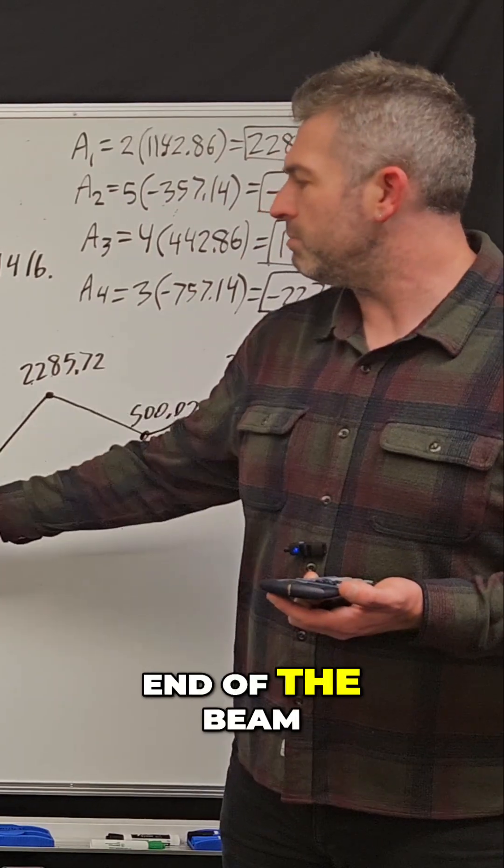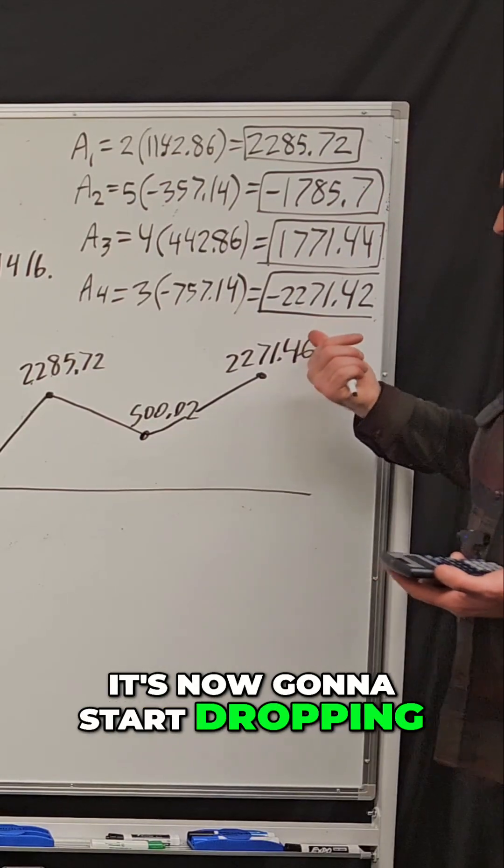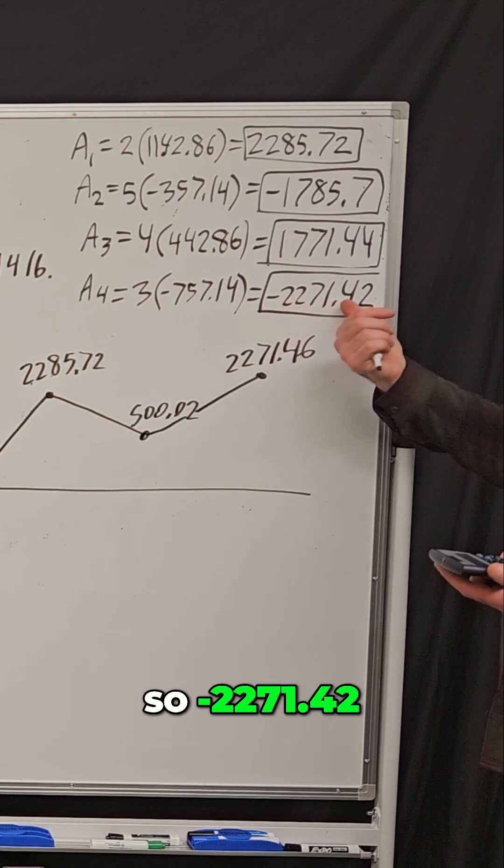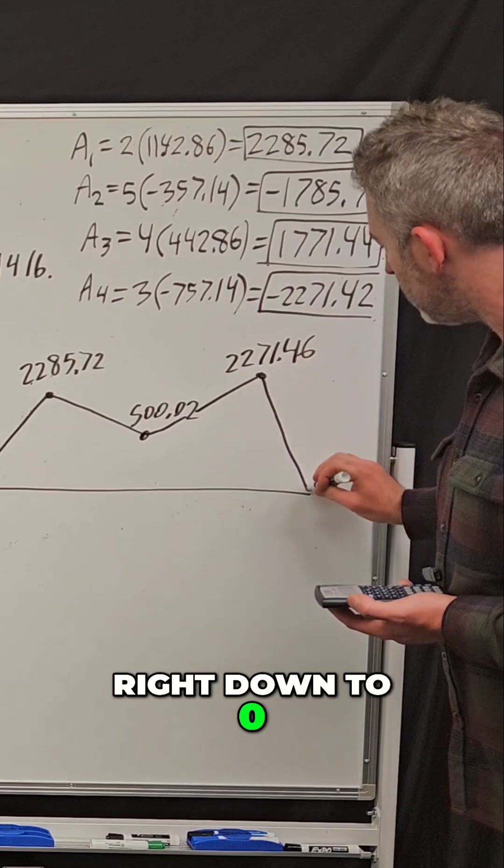And at the very end of the beam, these last three feet here, it's now going to start dropping, right? So minus 2271.42. And so that should take us right down to zero.